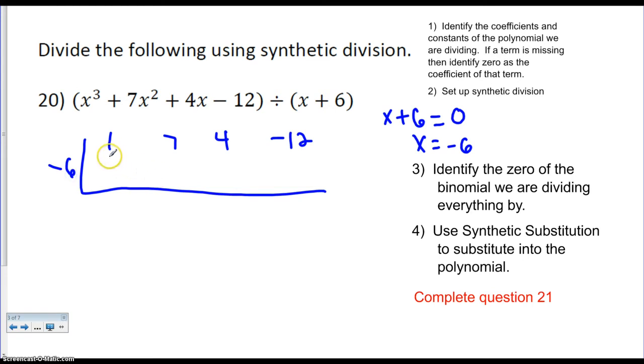So I am going to automatically bring down the leading term 1. And I'm always multiplying the bottom row by this number. So negative 6 times 1 gets me negative 6. 7 plus negative 6 is 1. So I'm adding these two terms. I'm multiplying this number by this one. So I have negative 6 again. 4 plus negative 6 is negative 2. And then negative 6 times negative 12 is positive 12. So I have a remainder of 0.